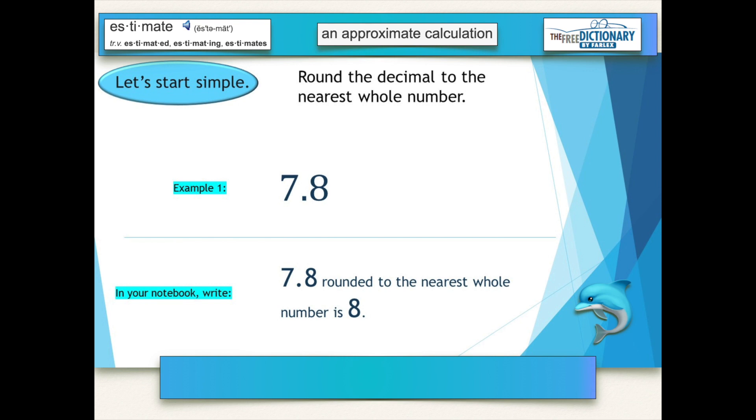Our first example here says, round the decimal to the nearest whole number. Our example here, we have 7.8, or correctly said, 7 and 8 tenths. In your notebook, you'll just write exactly what you see there. So 7 and 8 tenths rounded to the nearest whole number is 8.